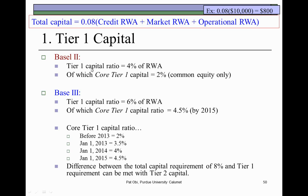Tier I capital sources include common equity and non-redeemable and non-cumulative preferred stock. Of this, core Tier I capital under Basel II should be no less than 2%. Core Tier I capital is only common equity, which comprises common stock investments by those who truly own the banking business, in addition to any retained earnings that have accumulated over the years.